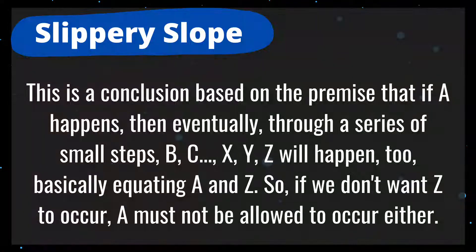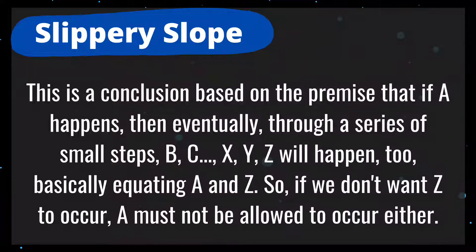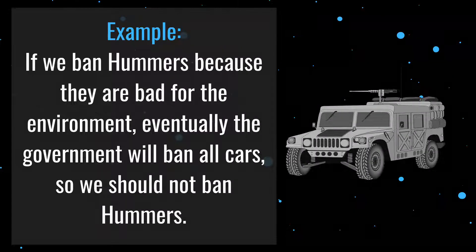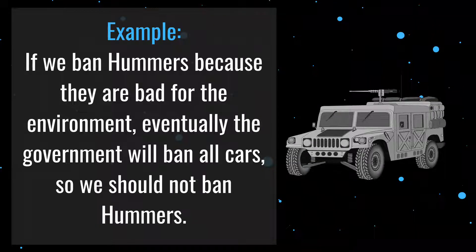Number 1 is slippery slope. This is a conclusion based on the premise that if A happens, then eventually, through a series of small steps, B, C, and so on — XYZ will happen too. Basically, equating A to Z. So if we don't want Z to occur, A must not be allowed to occur either. For example: if we ban Hummers because they are bad for the environment, eventually the government will ban all cars, so we should not ban Hummers. In this example, the author is equating banning Hummers with banning all cars, which is not the same thing.